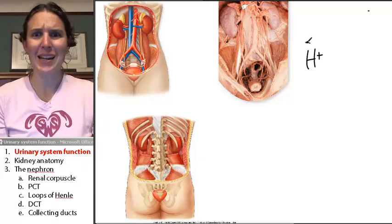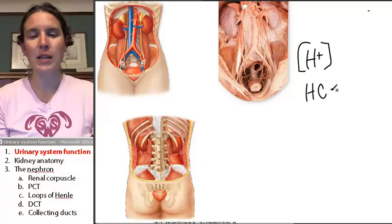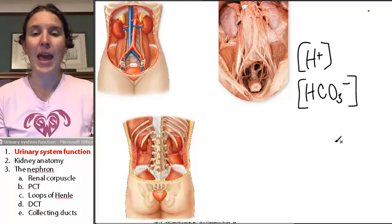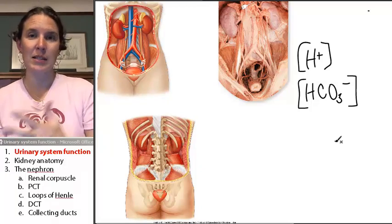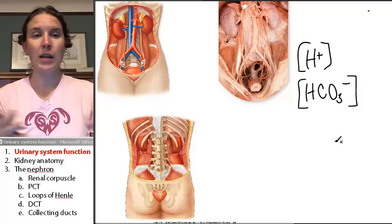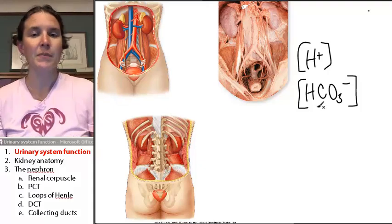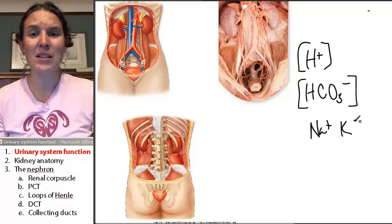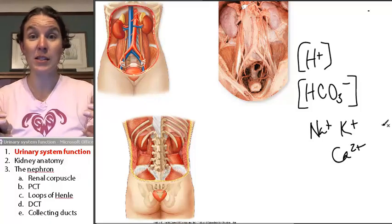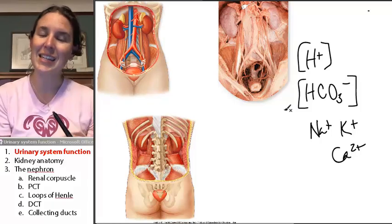So maintaining hydrogen ion concentration is really important. Another ion that's important to maintain is HCO₃⁻ — that's a bicarbonate ion. And bicarbonate ions tend to make substances basic. Similarly, if your blood becomes too basic, your cells stop functioning properly. Sodium ions, potassium ions, calcium ions — all of these substances are important to regulate in proper concentrations in the blood. And the kidneys play a role in that.